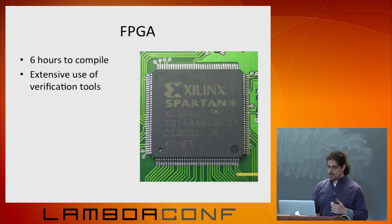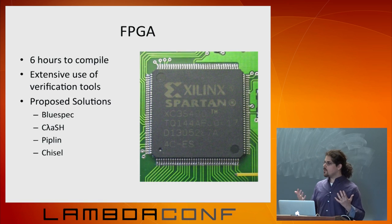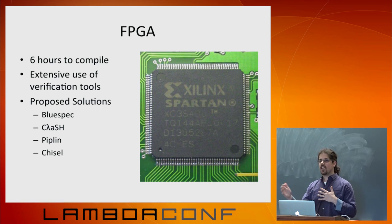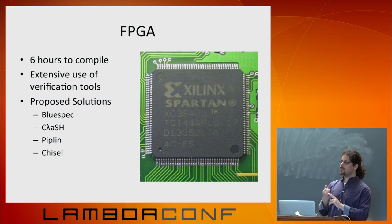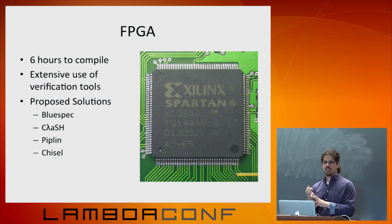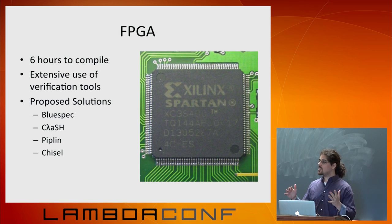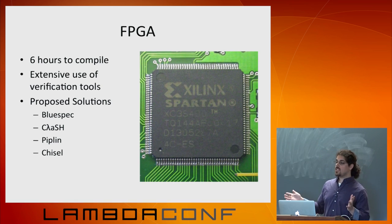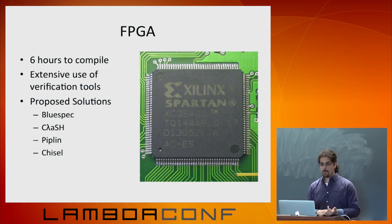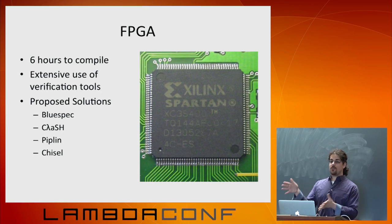There's been a lot of work here. If you're interested in domains where types are necessary — not just for criticality but for developer productivity — we have BlueSpec, which used to be Haskell on FPGAs but became a bastard child of SystemVerilog. There's Clash, which is Haskell on FPGAs from the University of Twente and much more like Haskell. There's Piplin, my project that compiled Clojure to FPGAs. Clojure doesn't have types, but Piplin added a simplified type system to deal with the idiosyncrasies of FPGAs. And there's Chisel, which is Scala on FPGAs from Berkeley.